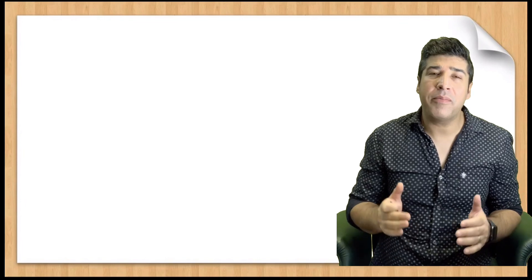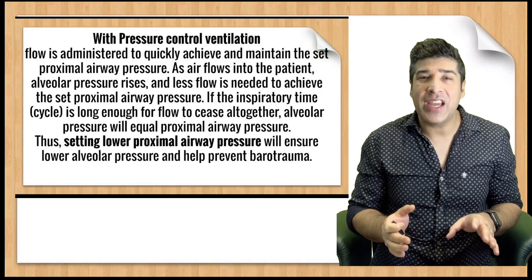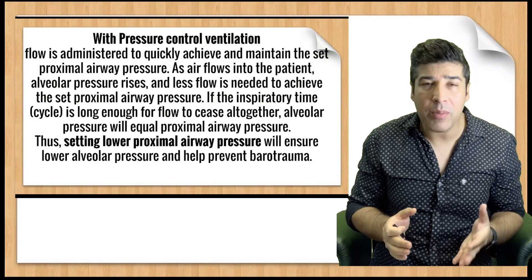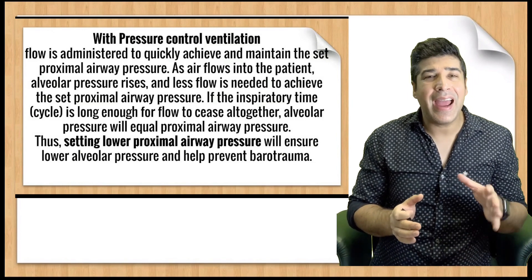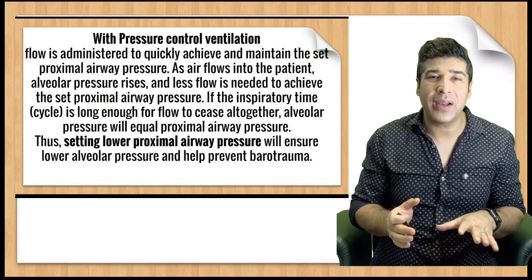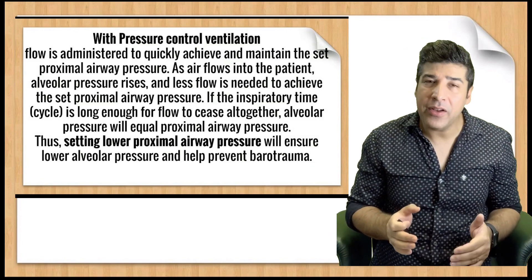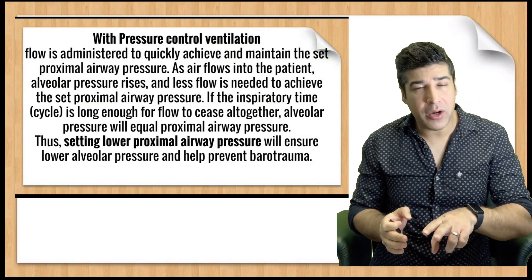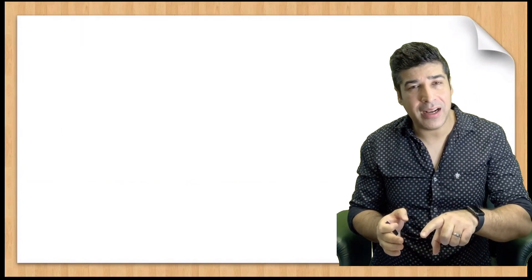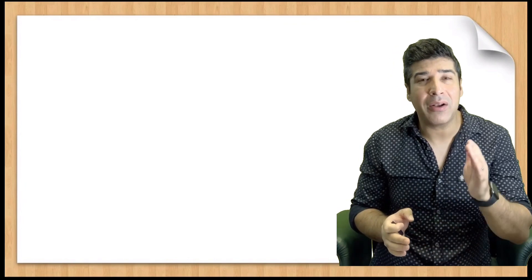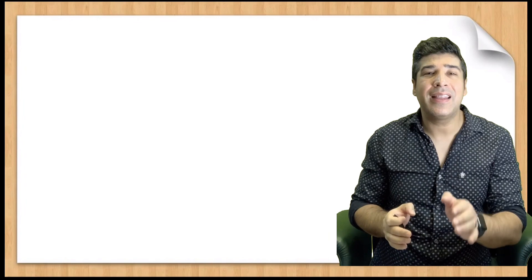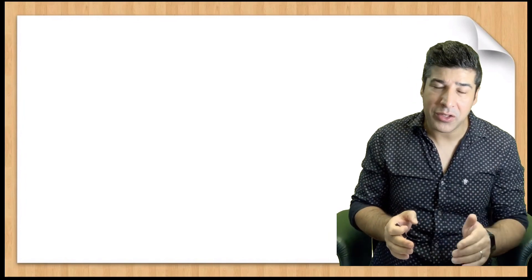In pressure control ventilation, we can change and set lower proximal airway pressures to minimize barotrauma. So in summary: in volume control ventilation, set lower tidal volumes and monitor plateau pressure; in pressure control ventilation, set lower proximal airway pressures to prevent barotrauma.